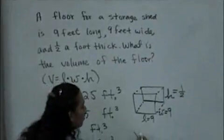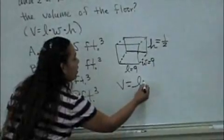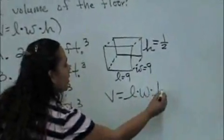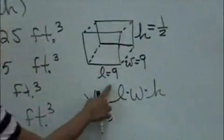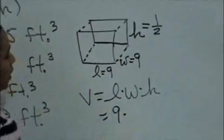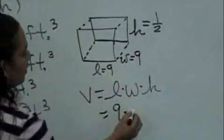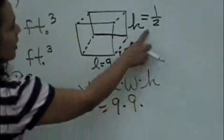So the volume is length times width times the height. So the length is 9, the width is 9, and the height is half.